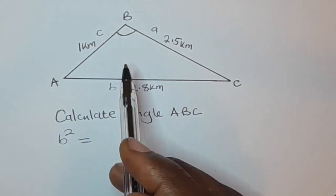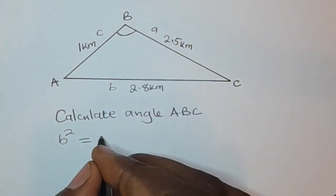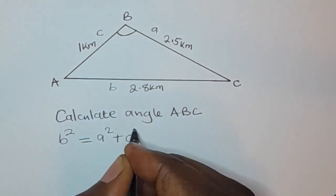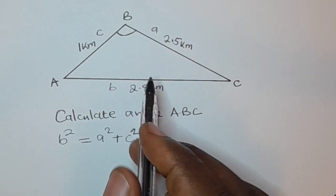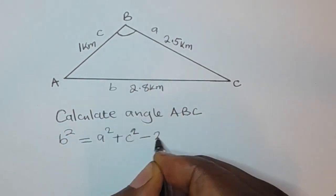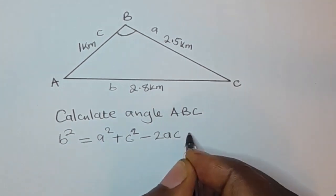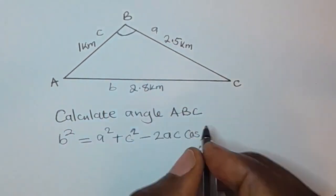So we're going to say a squared plus c squared minus the same sides that are forming the angle that we are being asked to find, then 2ac cos B, the angle that we are looking for. So cos B.